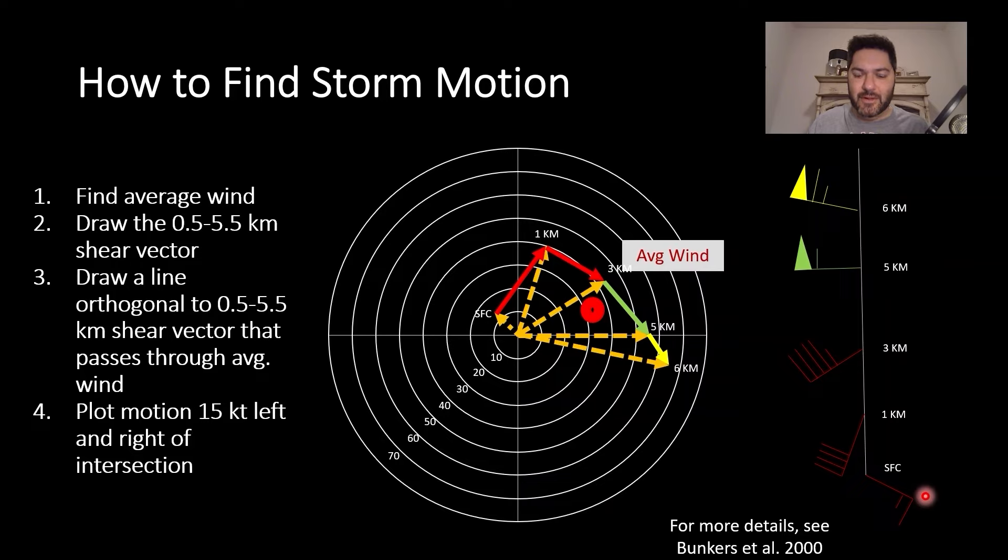The first step is to plot the average wind, which is a little bit of a guess here, but roughly here is what I'd put - maybe say it looks like 35 knots east-northeast is the average wind. The next step is to draw the 0.5 to 5.5 kilometer shear vector, so half a kilometer is probably roughly here, 5.5 is roughly here, so you can draw it from here to here. That little green line represents that shear vector.